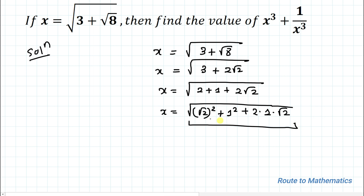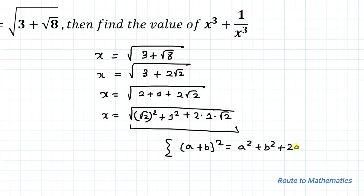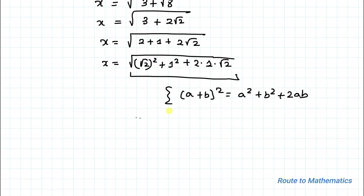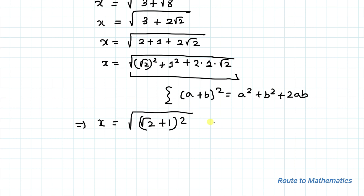Here we can notice that this expression is in the form of the algebraic identity (a + b)² equals a² plus b² plus 2ab. Here a is root 2 and b is 1. So this implies we can write x equals to root under (root 2 plus 1) whole square. The square root gets eliminated, and we get x equals to root 2 plus 1.